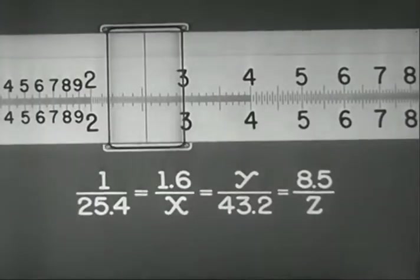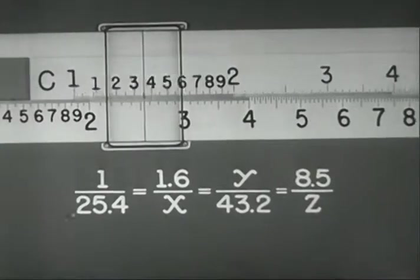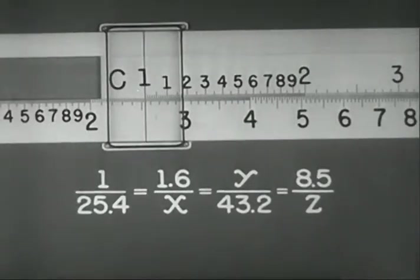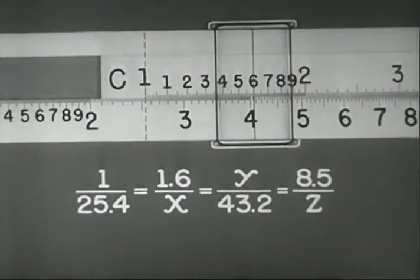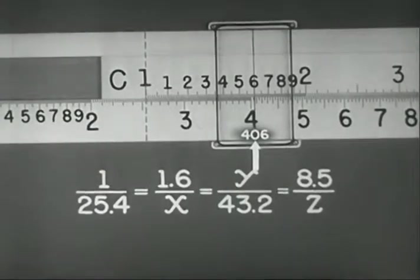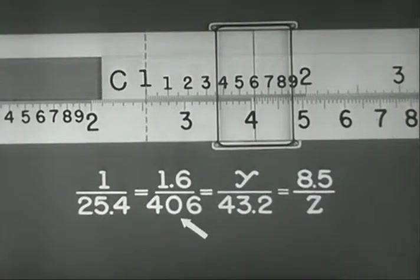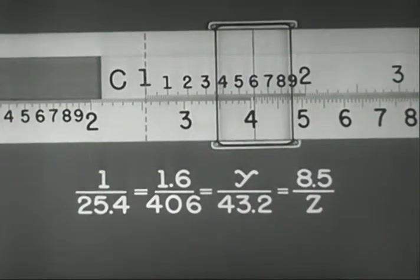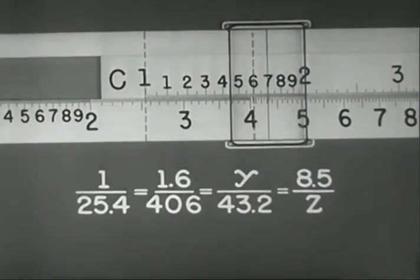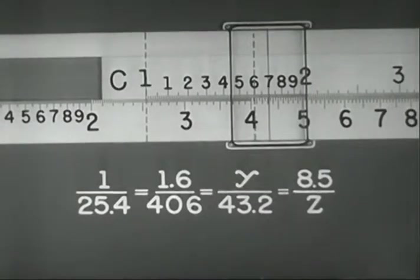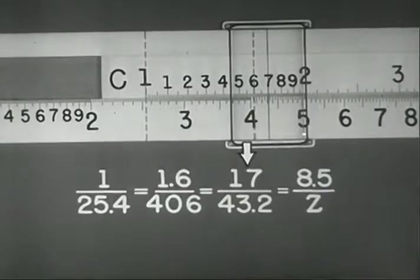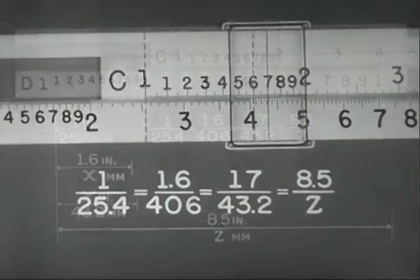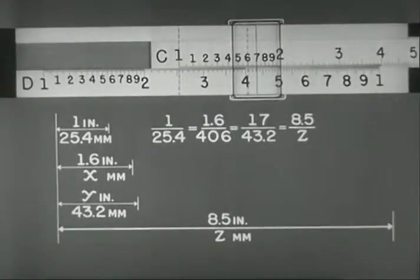To 254 on D, set 1 on C. Move the hairline to 16 on C, and read x as 406 on D. Move the hairline to 432 on D, and read y as 17 on C.